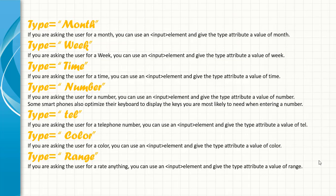Type is equal to tel — if you are asking the user for a telephone number, you can use the input element and give the type attribute a value of tel. The fifth one is type is equal to color — if you are asking the user for a color, you can use the input element and give the type attribute a value of color. And the sixth one is type is equal to range — if you are asking the user for rating anything, you can use the input element and give the type attribute a value of range.